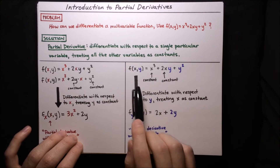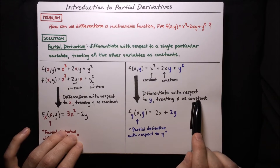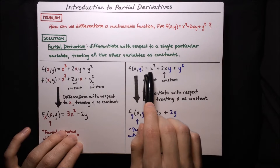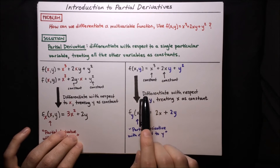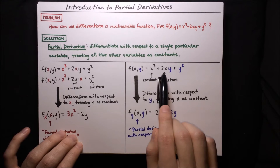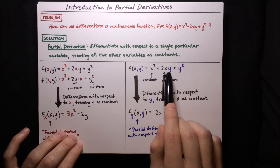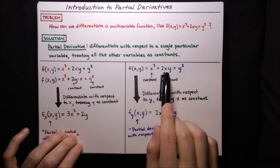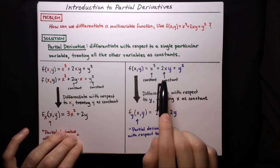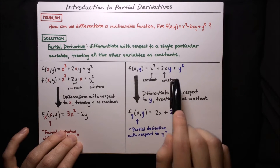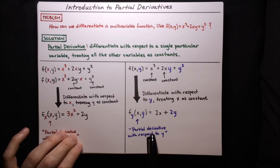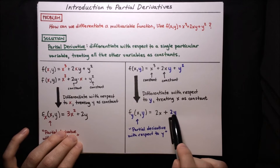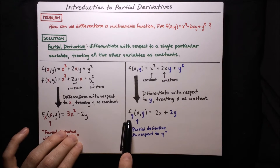Now we differentiate with respect to y, treating x as a constant. The first term x³ vanishes — it goes to 0. The second term is 2x times y; 2x is like a constant, so differentiating with respect to y we're just left with 2x. Then the derivative of y² with respect to y is 2y. So the partial derivative with respect to y is 2x + 2y, indicated by a subscript y after the function.